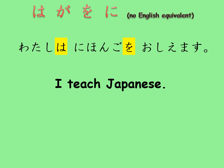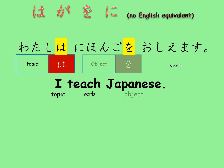These are the particles that show the position of the word in the sentence. The first example is 'watashi wa nihongo wo oshiemasu,' which means 'I teach Japanese.' The word 'I' is the topic of the sentence, 'teach' is the verb, and 'Japanese' is the object of the verb. So for 'watashi' we use the topic marker wa, and for 'nihongo' the object marker wo: watashi wa nihongo wo oshiemasu.